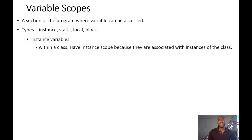The instance variables are variables you create within the class. They have instance scope because these variables are associated with the instance of a class. What that means is that when you make an instance of the class, the variables of that class go with the objects you created from the instance of the class.